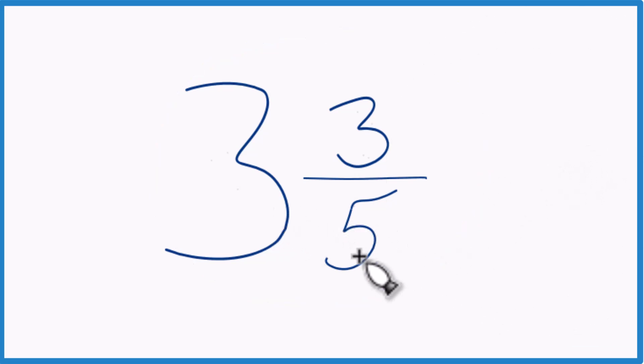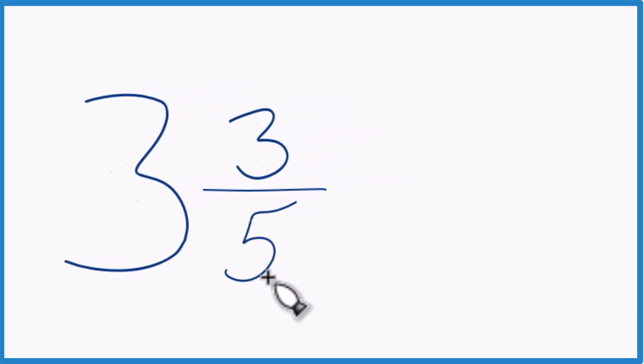Here's how you do it. 3 times 5, so we take the whole number. 3 times 5, that's 15. 15 plus 3 equals 18. Then we just bring the denominator across.